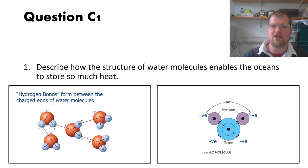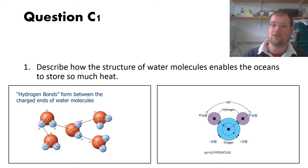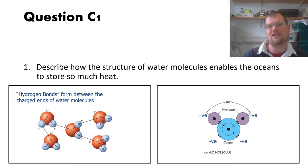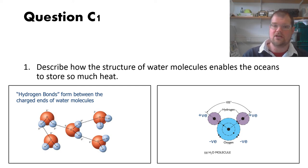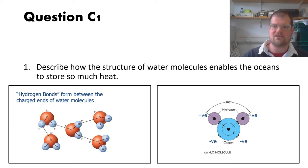Drawing a water molecule diagram explains why it is polar: it has a negative charge on the oxygen and the hydrogens have small positive charges, and that then leads to the hydrogen bonding. But you really had to show a diagram that showed the hydrogen bonding, because that was the important part for the question.